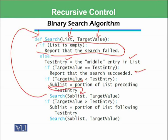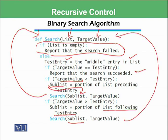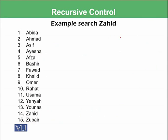This means the actual list passed by the previous function is on hold — just like the call from your friend was on hold in the previous module. Similarly, if the target value is greater than the test entry, the sub-list is computed by taking the portion of the list following the test entry, and that sub-list is again sent to the search function. Let's execute this function for a normal value first, and then we will check the case when the list is empty.